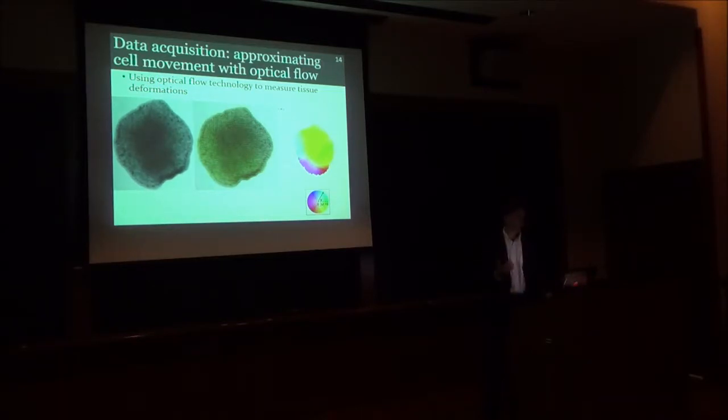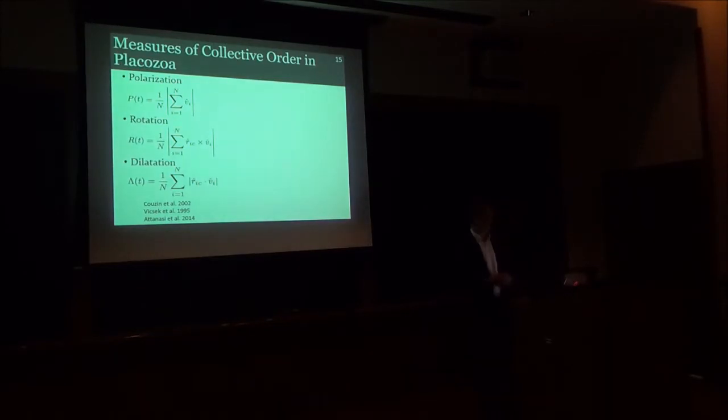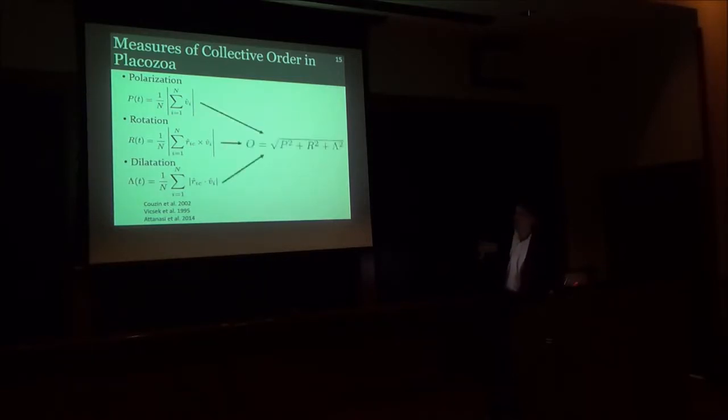Now that I have this quantification, I can start to look for order and phase transitions. Thankfully there has been a lot of previous work that has tried to quantify collective order in these moving systems. One such order parameter is polarization, which measures the tendency of these particles to align with one another and move in the same direction. Another is rotation, which is like a measure of the angular momentum of a collectively moving system. And then there is dilatation, which is to what extent this collective system is expanding or contracting in a coordinated way.